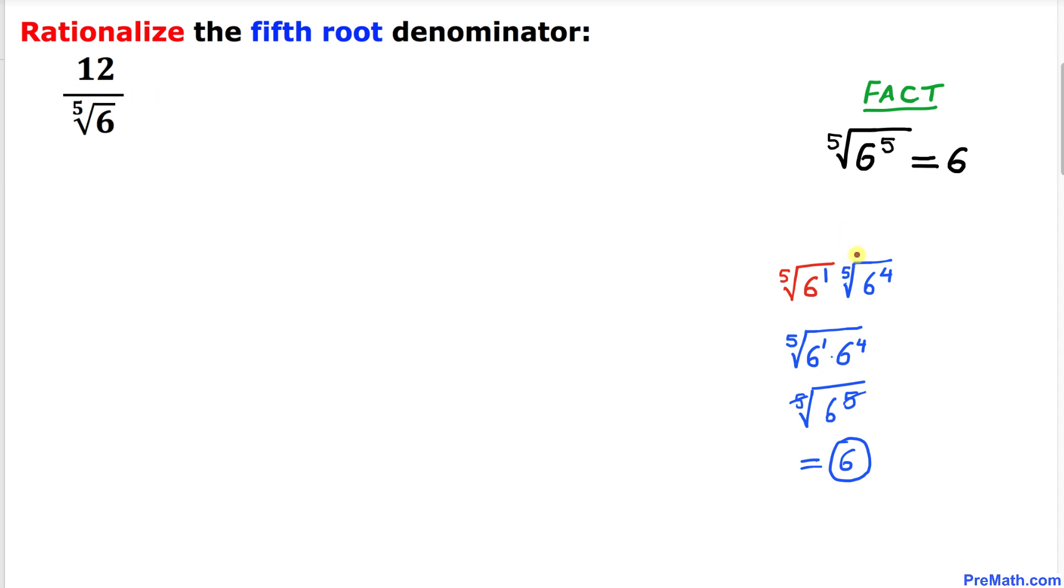We're going to multiply by this part: the fifth root of 6 to the power 4. So I'm going to multiply and divide by the fifth root of 6 to the power 4.